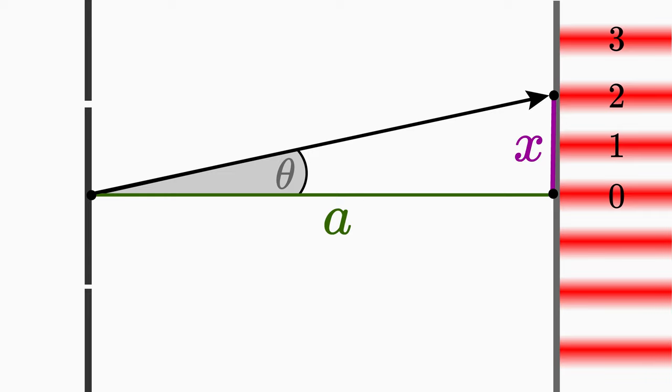So that it doesn't get too complicated, we make two approximations. They are justified if we consider a few things.